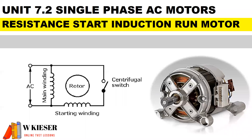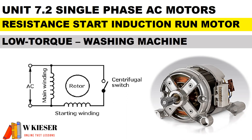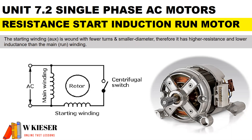We'll be looking at three types of single-phase AC motors, and the first one is the resistance start induction run motor. It has low torque, and a good application is a washing machine. The start winding, also known as the auxiliary winding, is wound with fewer turns and has a smaller diameter. Therefore, it has higher resistance and lower inductance than the main winding, also known as the run winding.